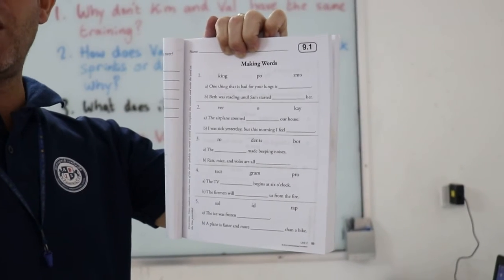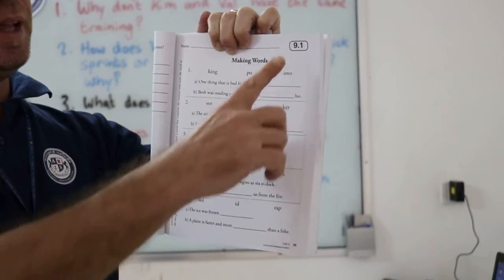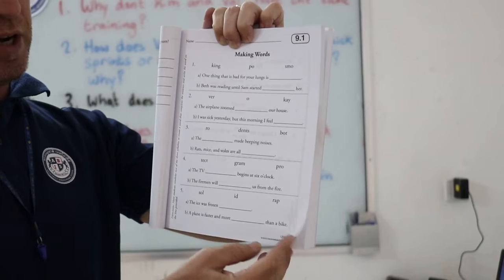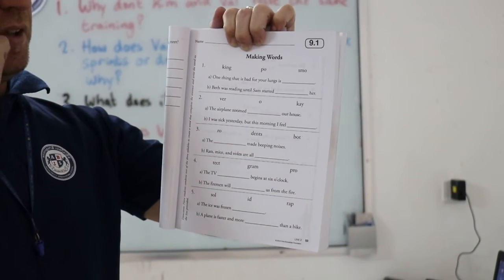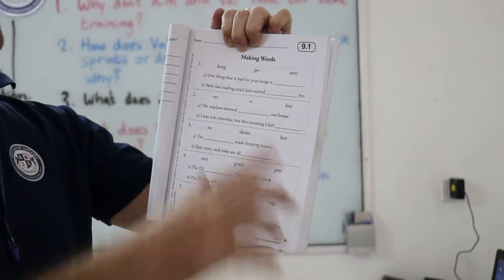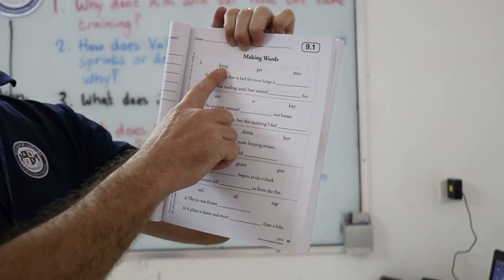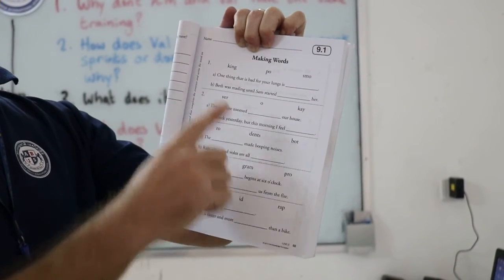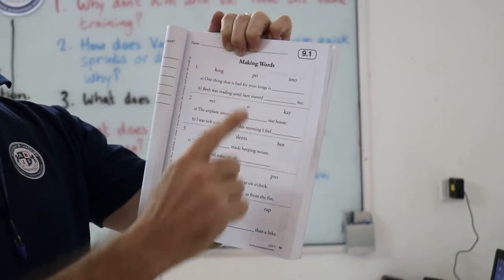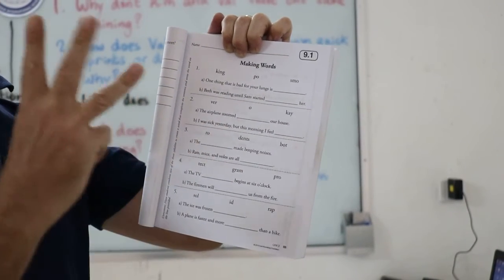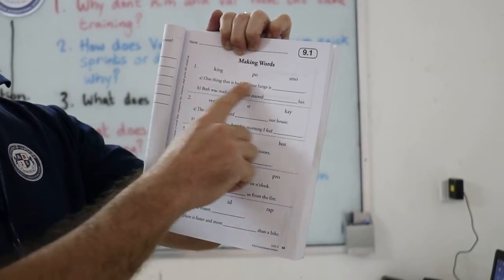Okay kids, if you can turn to your workbook, this is for your homework, section 9.1, and that's on page 53. So, what you have to do with these, number one, you've got the words King, Poe, and Smough. Now you've got to answer the questions by combining these words either into a two-syllable or a three-syllable word to make an answer.